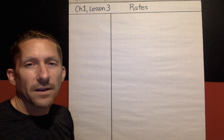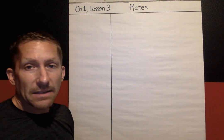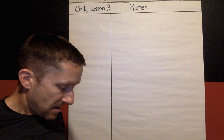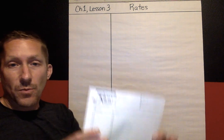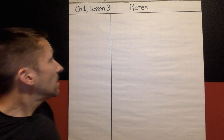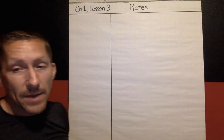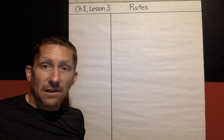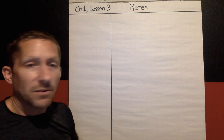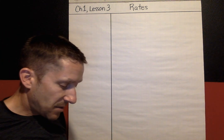Hello students, Mr. Bickford again. Today I'm bringing you Chapter 1, Lesson 3, called Rates. You do need a Cornell Note page, so either one of these or your comp book. Whenever you see the Cornell Note format on the screen, that means you're following along, pausing if you need to, rewinding if you need to, and creating what you see here. Let's get right into it.